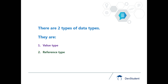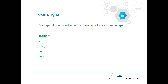There are two types of datatypes. One is value type, second is reference type. If you are creating a variable which is like int, string, float, bool, etc., the values are stored in stack memory, and this type of datatype is known as value type.